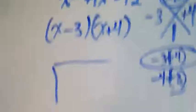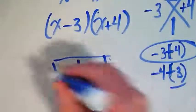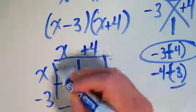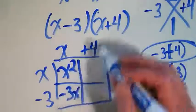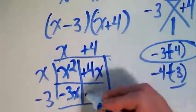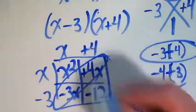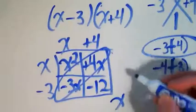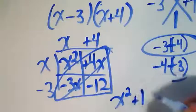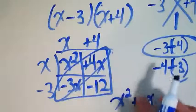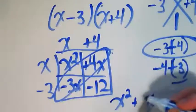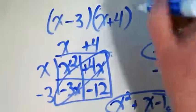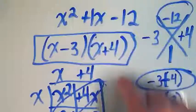I'm going to check it with my box. x squared, negative 3x, positive 4x, negative 12. When I add those together, I get x. So that checks because I have x squared plus 1x, which I would leave that invisible, minus 12. That means that these are our factors of this original polynomial.